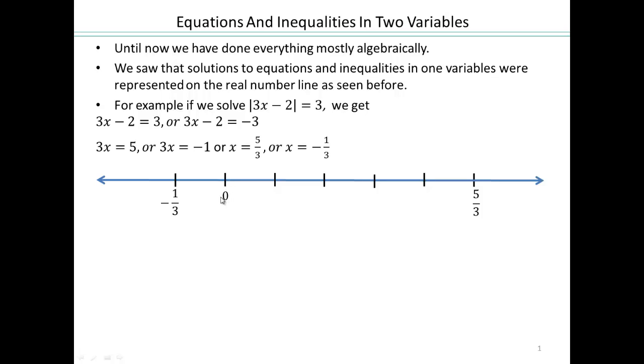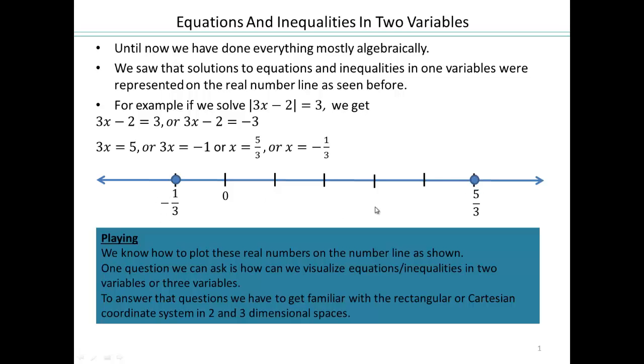If I label this tick mark as 0, then this is 1 third, 2 thirds, 3 thirds, 4 thirds, 5 thirds. This is negative 1 third. And so negative 1 third and 5 thirds are your solutions.